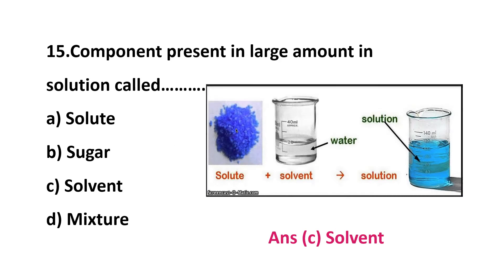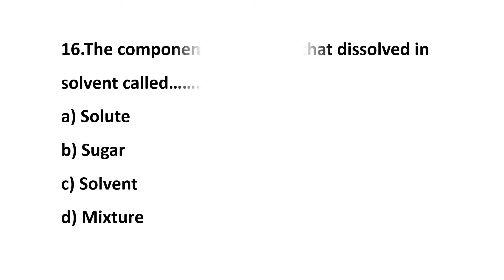Question 15 (solution): if we prepare a solution, we take the solvent in a large amount and the solute particles will be in a lesser amount. So the large component present in the solution is the solvent. Question 16: the component of a solution that dissolves in the solvent is called — option A: solute, option B: sugar, option C: solvent, option D: mixture. The answer is option A: solute. In a solution, the solute is dissolved in the solvent.